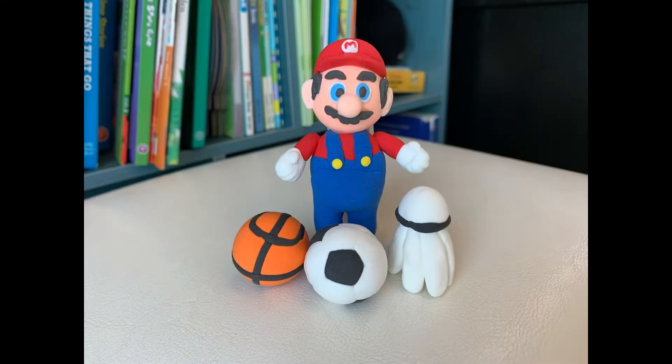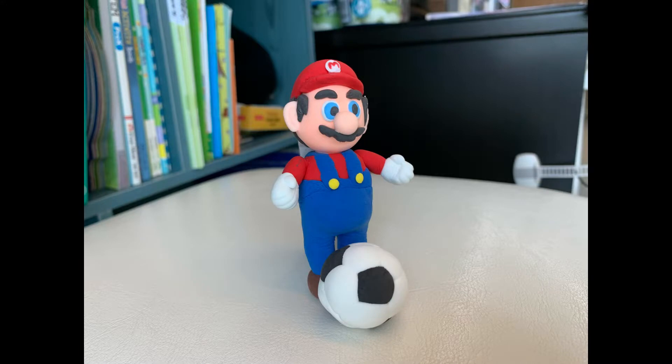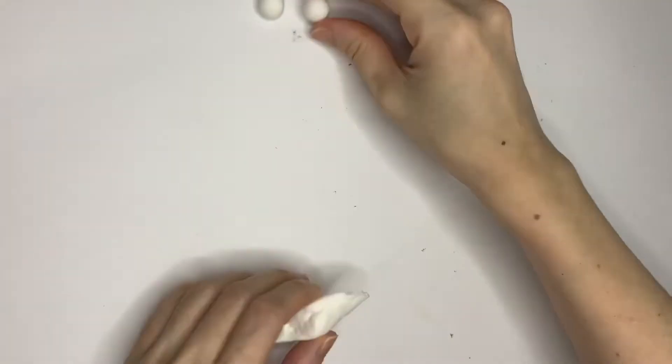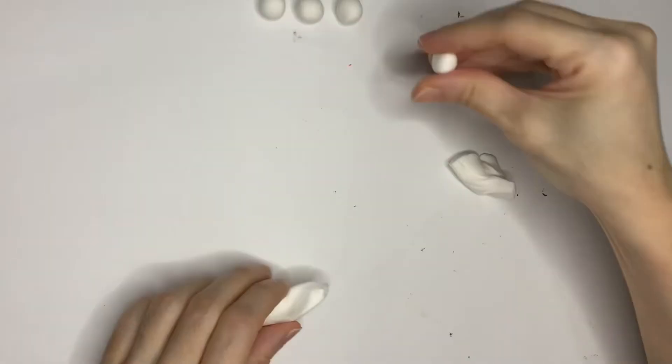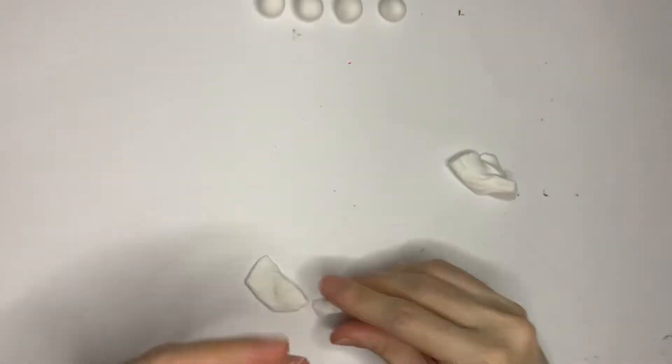Hello everyone, we are going to learn to make three sports items today. Let's start with the soccer ball or the football. Roll up at least 12 white balls and 4 black balls. You can make more of the balls.